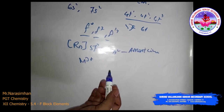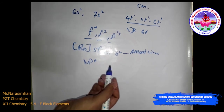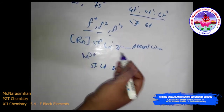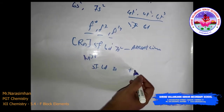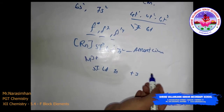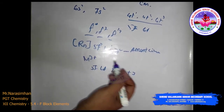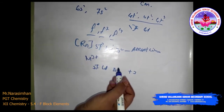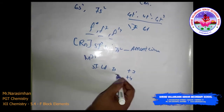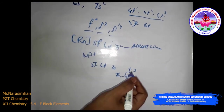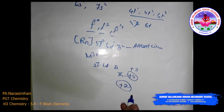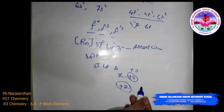Regarding oxidation states of actinoids: the 5f, 6d, and 7s levels are of comparable energies, so they exhibit a wide range of oxidation states. The common oxidation state is +3, except thorium, which does not exhibit +3 — thorium only shows +4 as its stable oxidation state. Some elements exhibit +4, +5, +6, and +7 as well. The highest oxidation state is +7, shown by neptunium and plutonium.